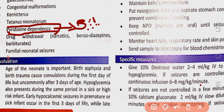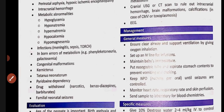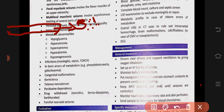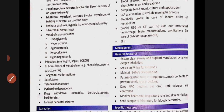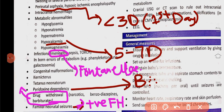If the cause is birth asphyxia or birth trauma, seizures will occur within the first day of life — within three days. If seizures occur between day five and day seven, that is due to hypocalcemia — low calcium.